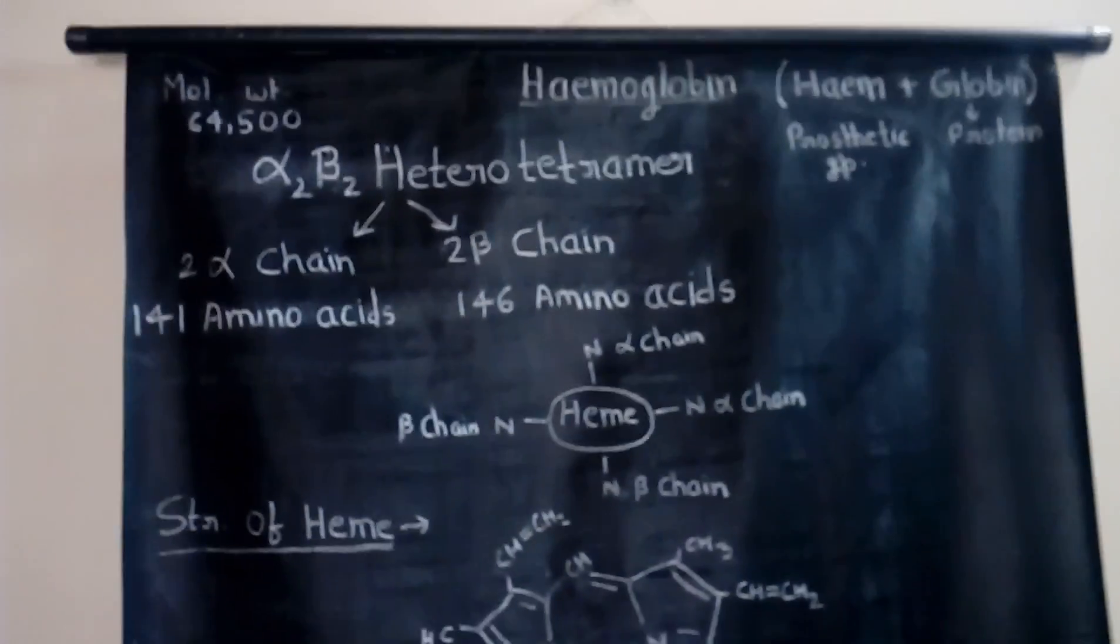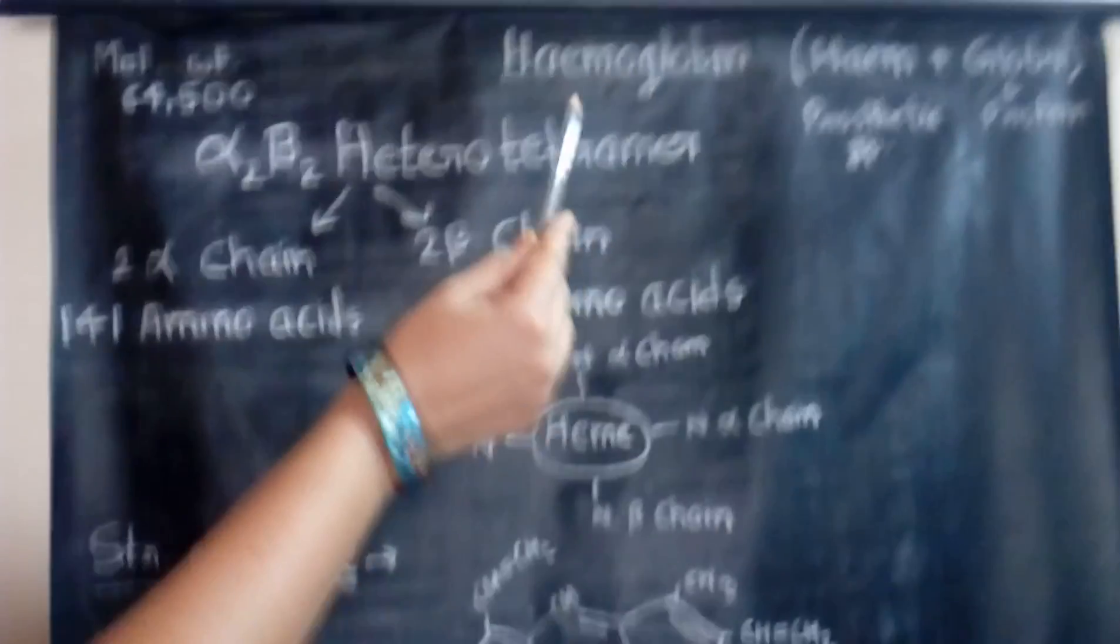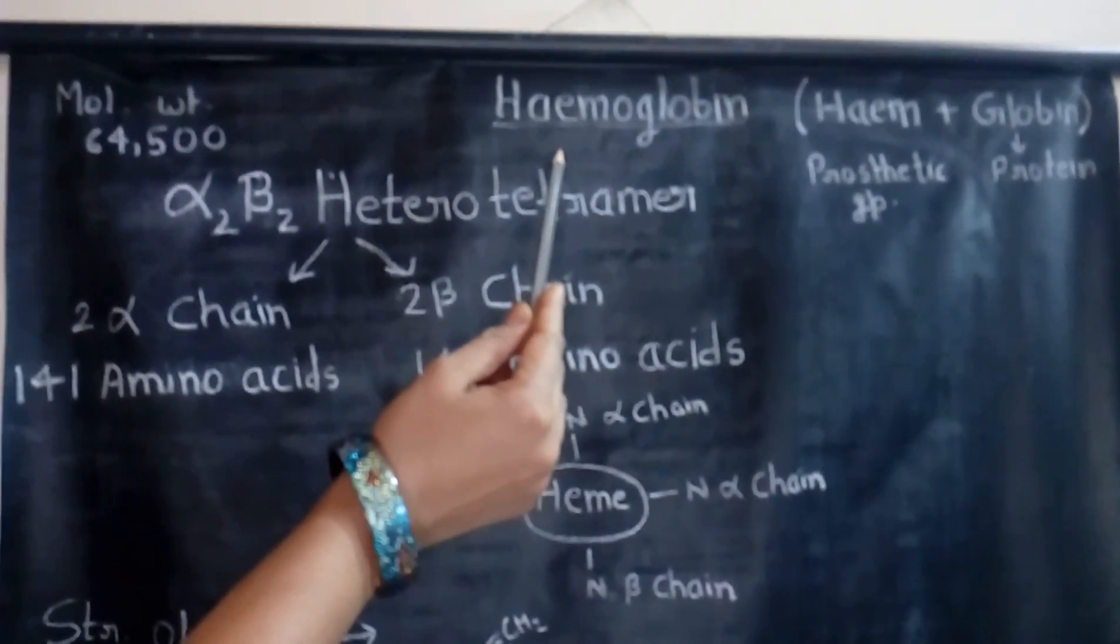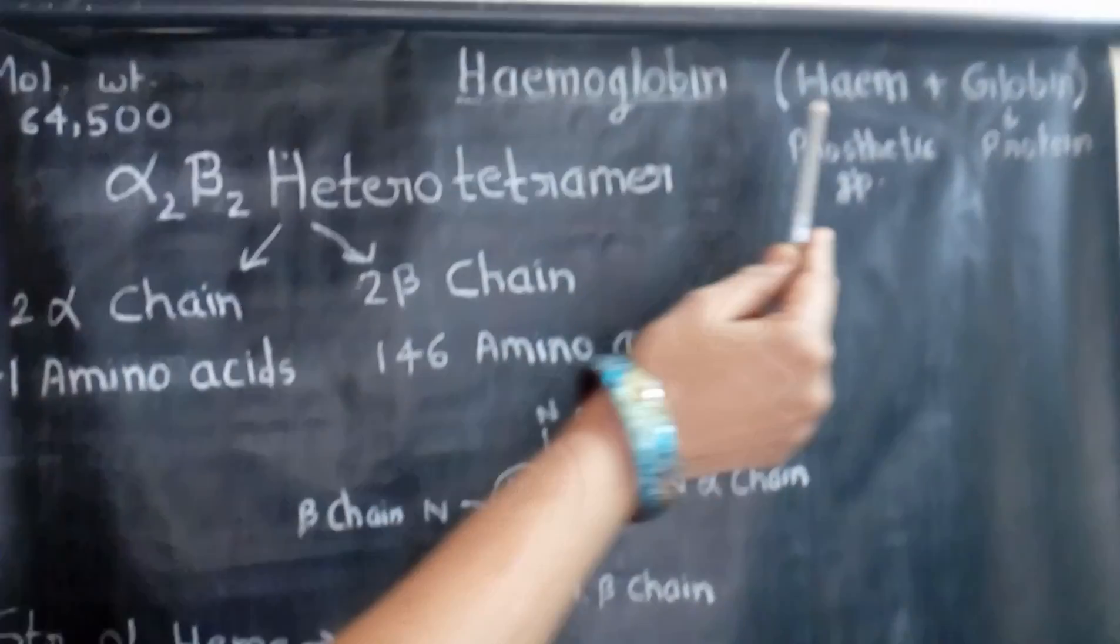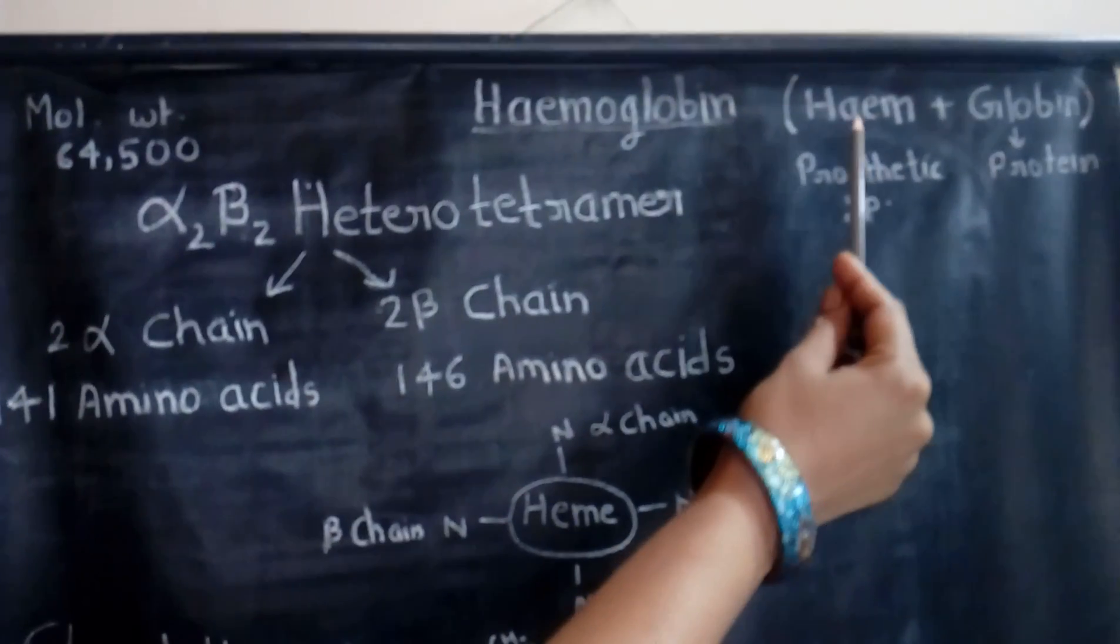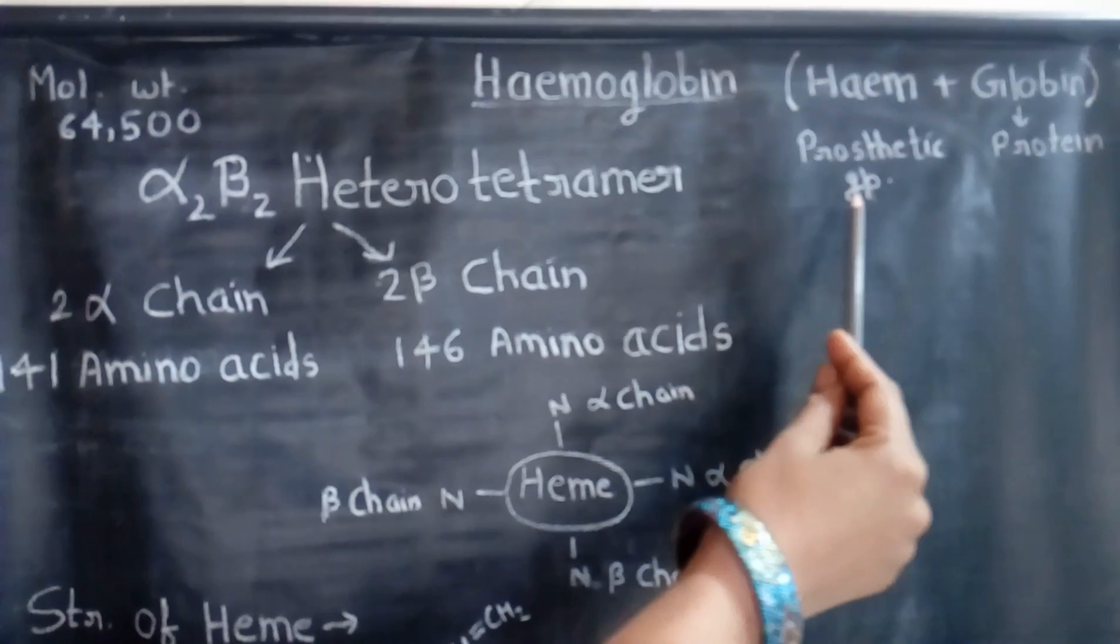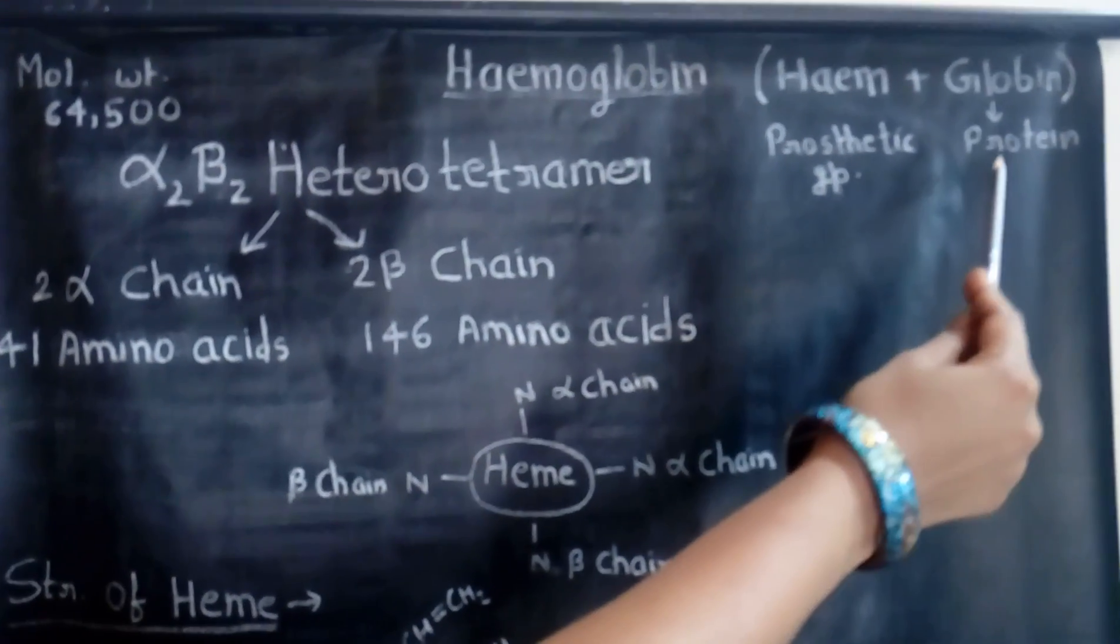Hello friends, today we will study the structure of hemoglobin. The word hemoglobin consists of two words: heme plus globin. Heme is a prosthetic group containing iron and globin is a globular protein.